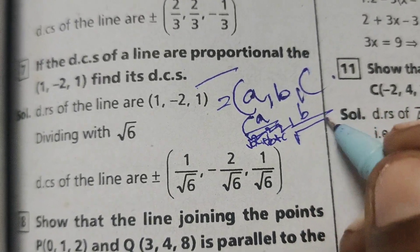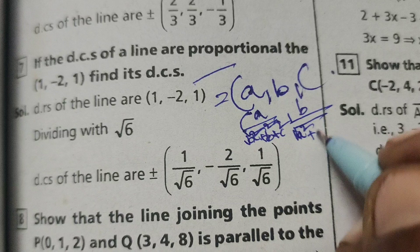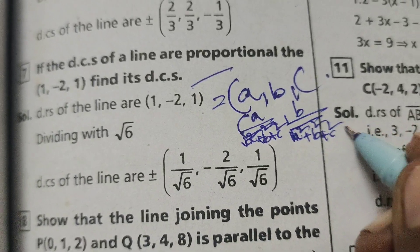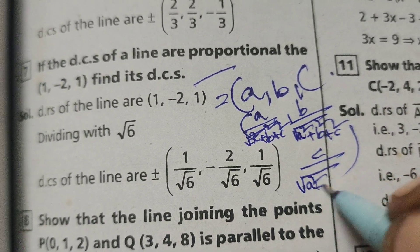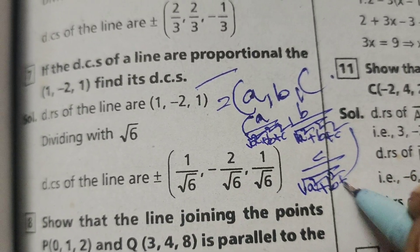b by root of a squared plus b squared plus c squared, and c by root of a squared plus b squared plus c squared.